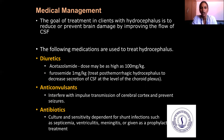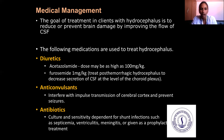Medications used in hydrocephalus: diuretics such as acetazolamide, dose up to 100 mg/kg, and furosemide 1 mg/kg, to treat post-hemorrhagic hydrocephalus and decrease secretion of CSF at the choroid plexus. Anticonvulsants interfere with impulse transmission in the cerebral cortex to prevent seizures. Antibiotics are given for shunt infections such as septicemia, ventriculitis, meningitis, or as prophylactic treatment.